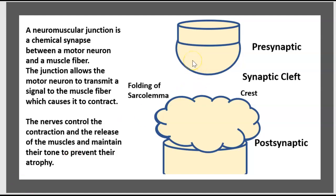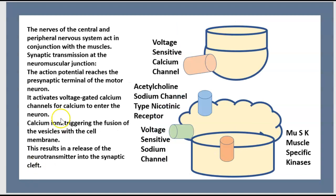Here, the presynaptic and the postsynaptic are separated by the synaptic cleft. The postsynaptic shows some crests and folding of the sarcolemma. The nerves of the central and peripheral nervous system act in conjunction with the muscle.